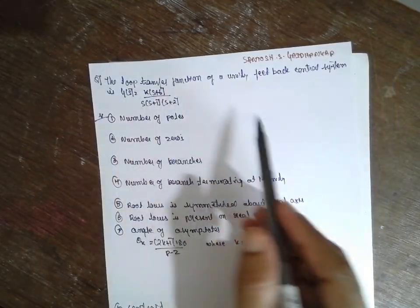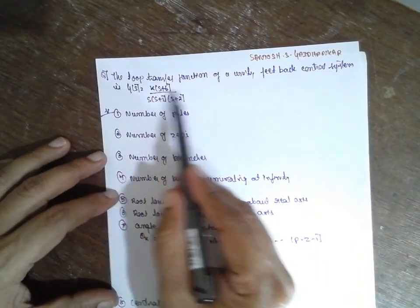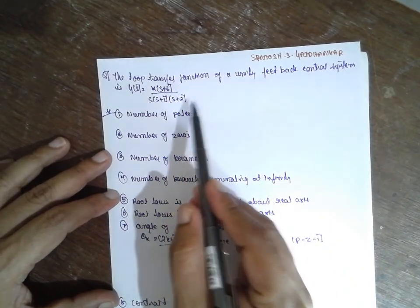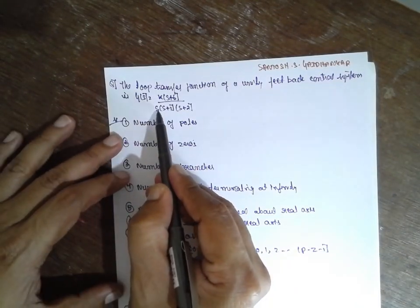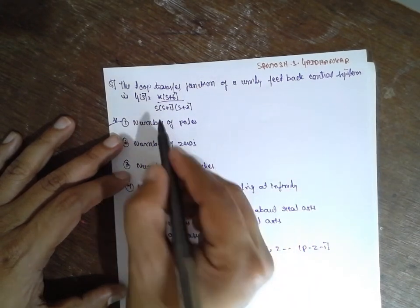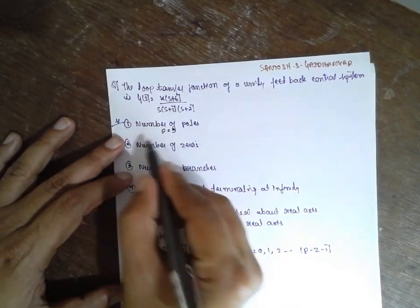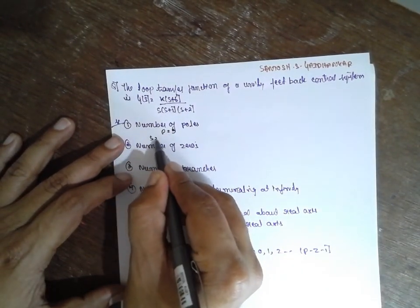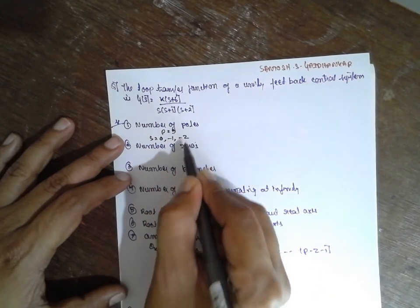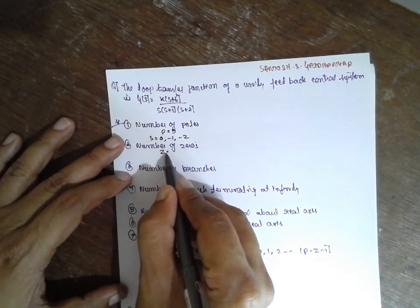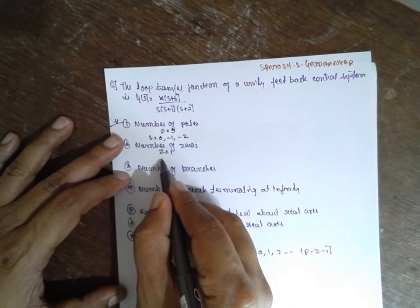There is a root locus. The number of poles here is 1, 2, 3 — P is equal to 3. S is equal to 0, minus 1, minus 2. Number of zeros: Z is equal to 1. Therefore S is equal to minus 6.